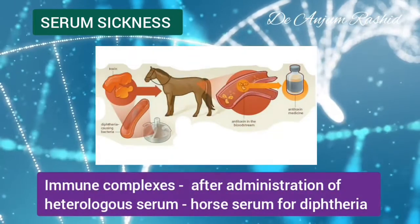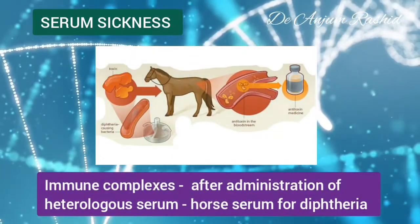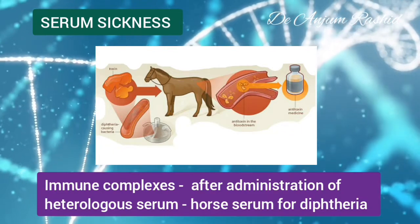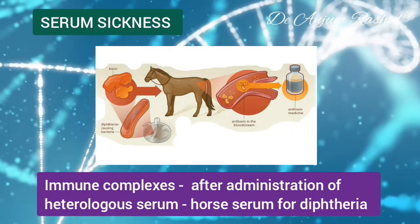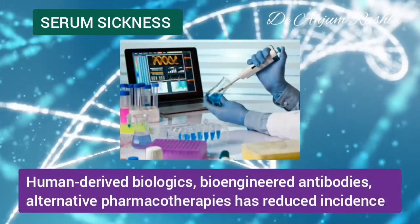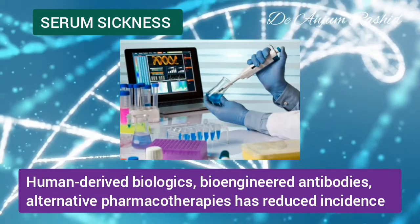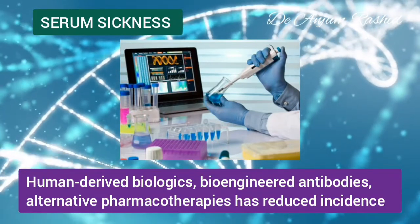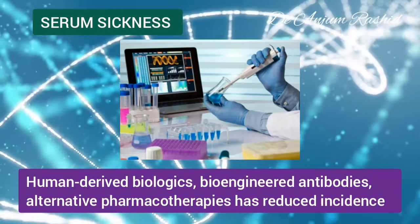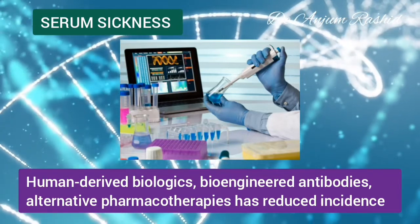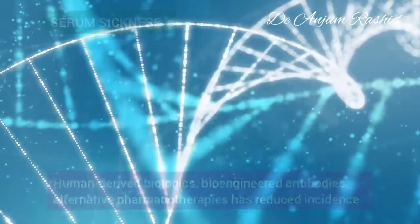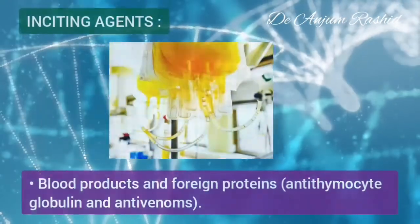The immune complexes were first described after the administration of heterologous serum such as horse serum for diphtheria treatment. But the availability of human-derived biologics, bioengineered antibodies, and alternative pharmacotherapies has greatly reduced the incidence of serum sickness.